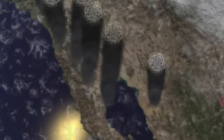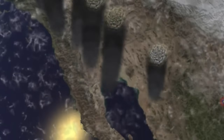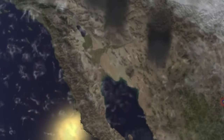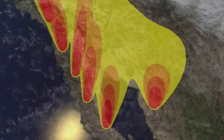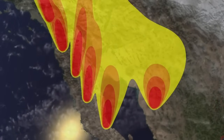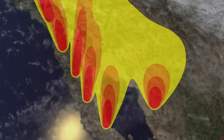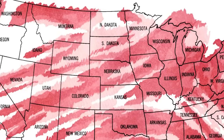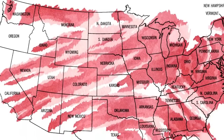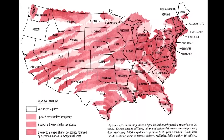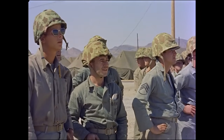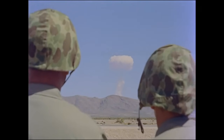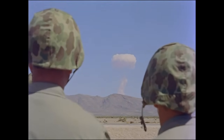Heavier particles fall to the ground quicker, depositing intense radiation in areas close to the explosion's epicenter. Smaller particles travel much farther from the blast site, creating an elongated footprint of fallout that can affect regions far beyond the initial impact zone. Air-bursting nuclear weapons produce almost no local fallout, but still generate this downwind footprint.